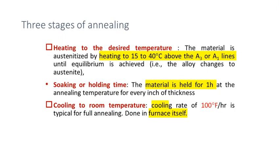The three stages are heating, soaking or holding, and cooling to room temperature. In the case of annealing, cooling is done inside the furnace itself. After sufficient soaking time, the heating furnace is switched off, so the temperature gradually decreases until it reaches room temperature — a process that can take many hours. The cooling rate is approximately 100 degrees Fahrenheit per hour, which is a very slow cooling rate when using the furnace for the cooling process.